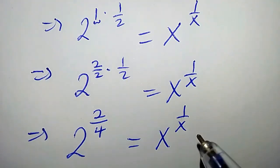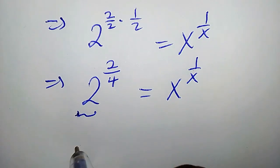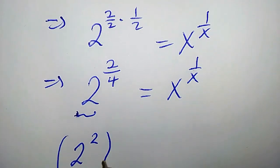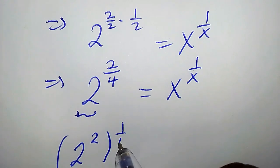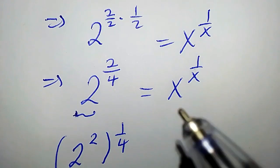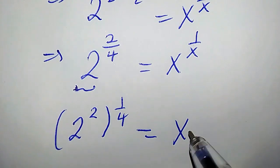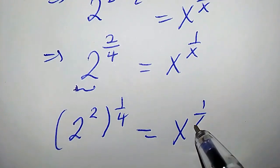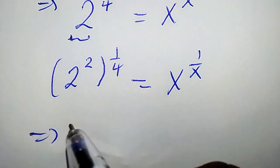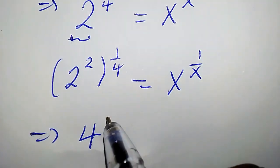We can rewrite 2 to the power of 2 times 1 over 4 — pulling out the denominator — equals x to the power of 1 over x. Now, 2 squared is simply 4, that is 2 times 2, so we have 4 to the power of 1 over 4 equals x to the power of 1 over x.